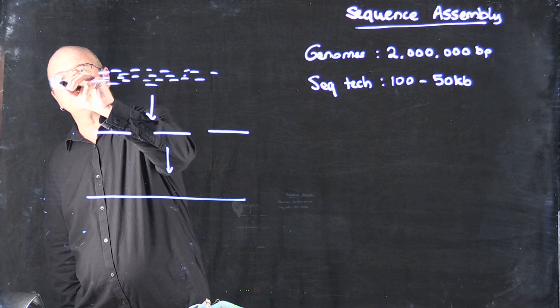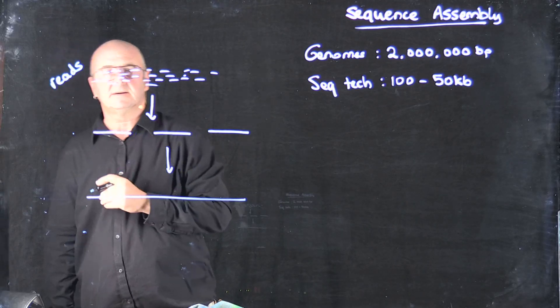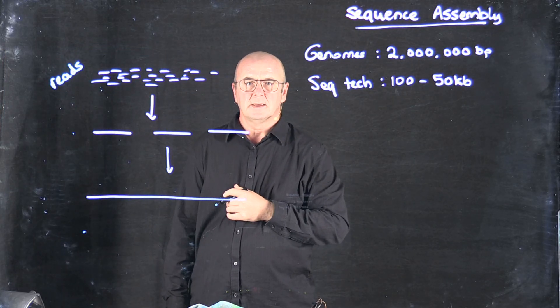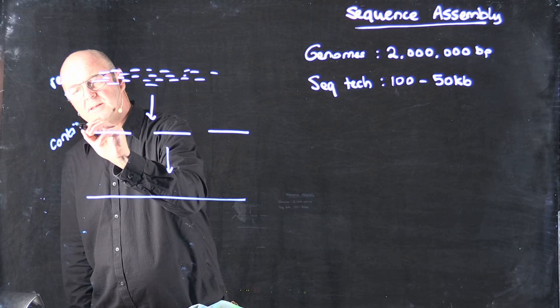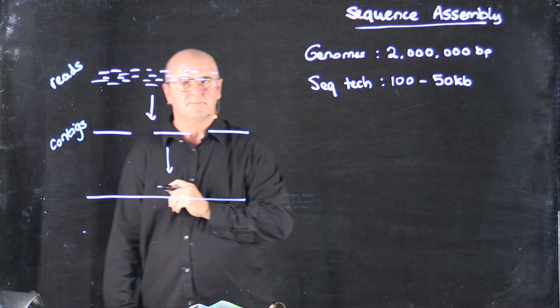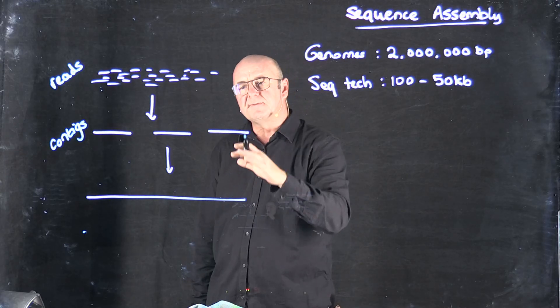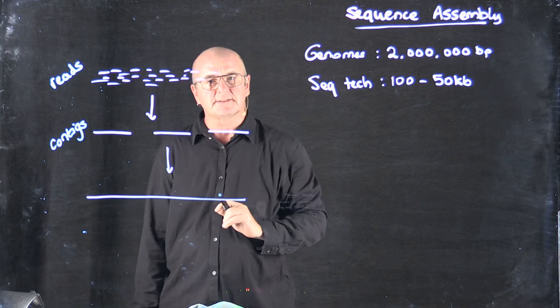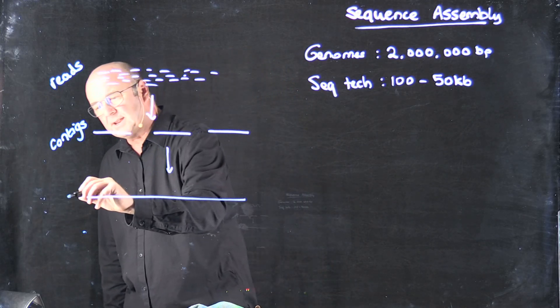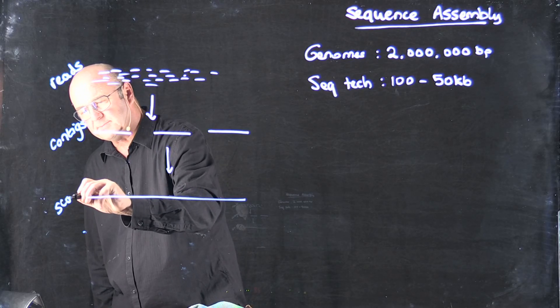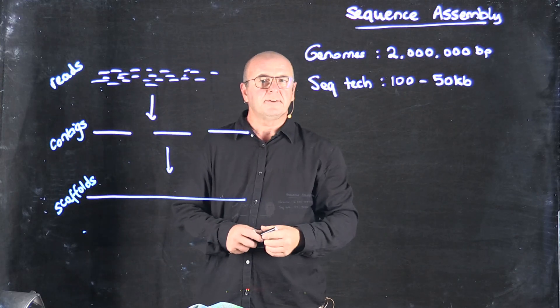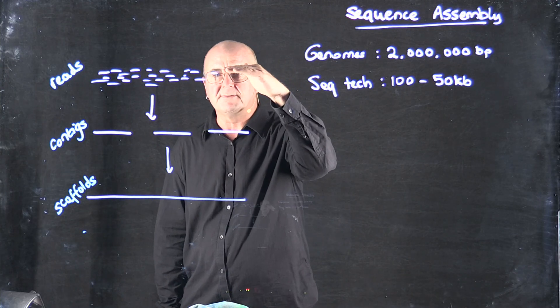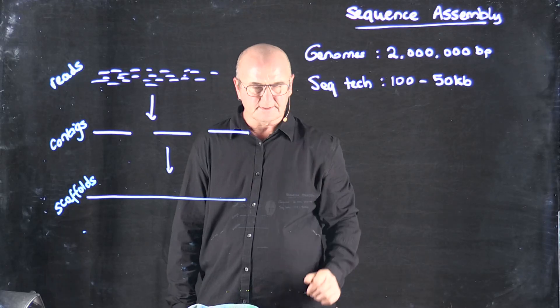But basically what we refer to is these are reads. And then when we assemble the reads we get contigs. And then if we figure out the orientation of contigs relative to each other we can get scaffolds. And as we go through the process we'll talk about how we go from reads to contigs to scaffolds.